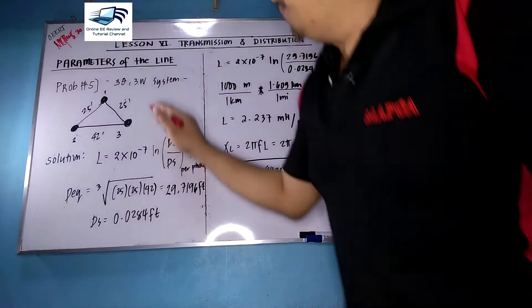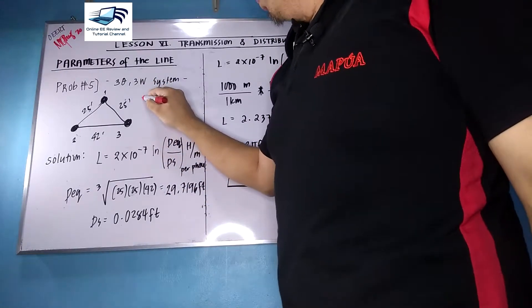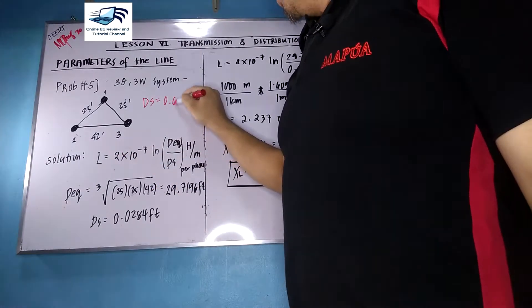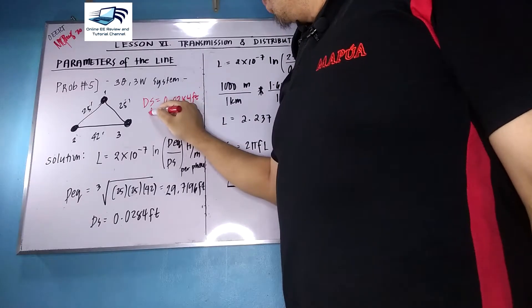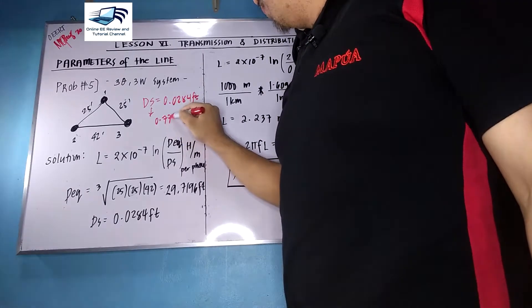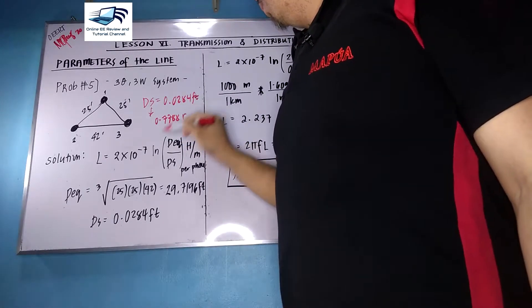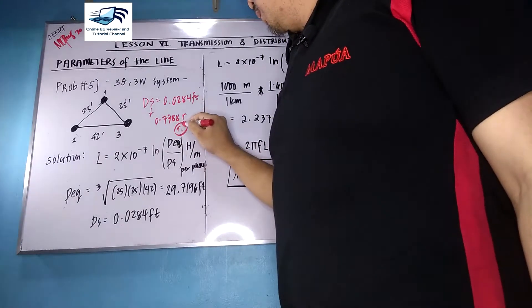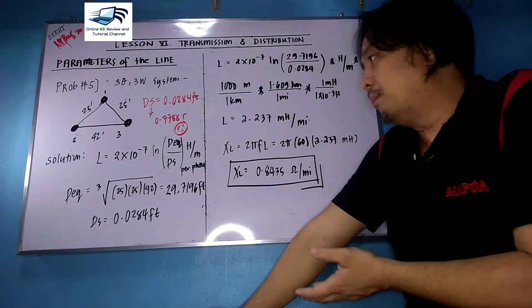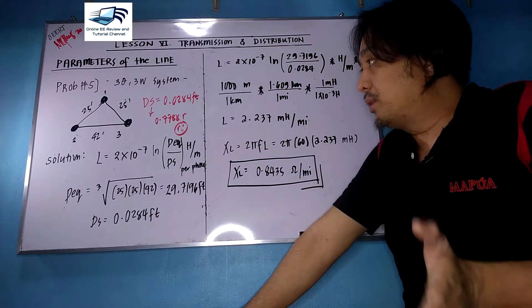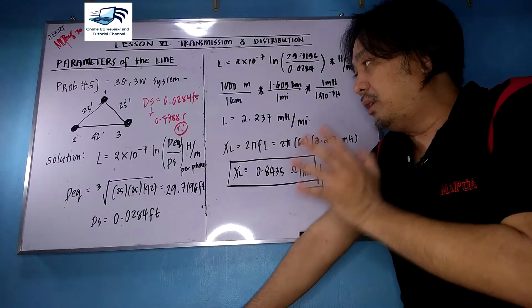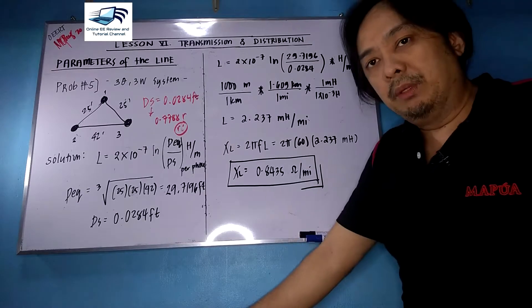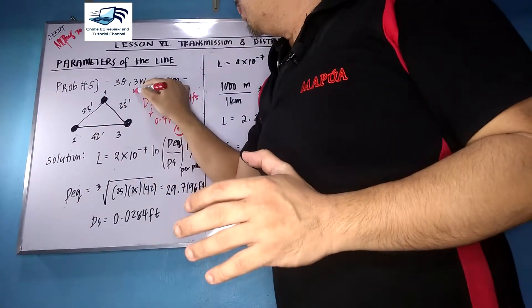We have a three-phase three-wire system. The given DS is 0.0284 feet — please note that DS is already 0.7788 times r, which is the equivalent radius r-prime, also known as the self-geometric mean radius or GMR or self-distance. You do not need to get the radius and multiply by 0.7788 since DS is already given directly.